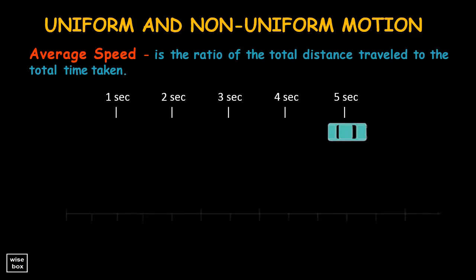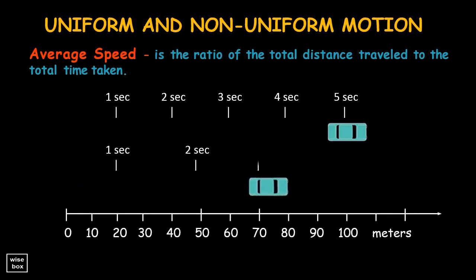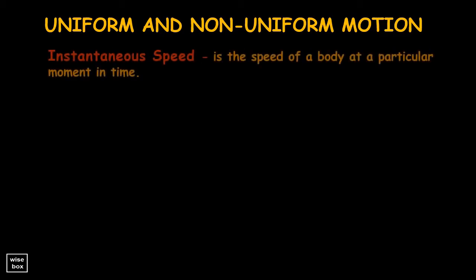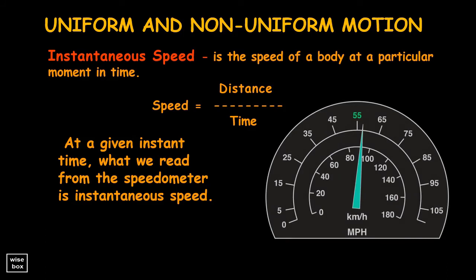Then the driver travels at different speeds for 100 meters in 5 seconds. His average speed is still computed as 100 divided by 5, thus his average speed is also 20 meters per second. Instantaneous speed is the speed of a body at a particular moment in time. At a given instant, what we read from the car speedometer is instantaneous speed.